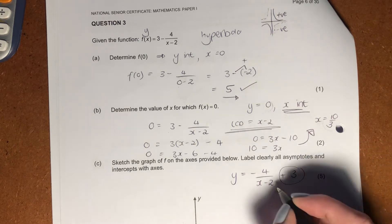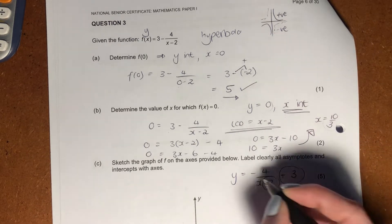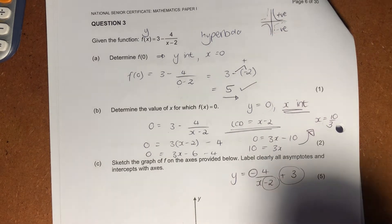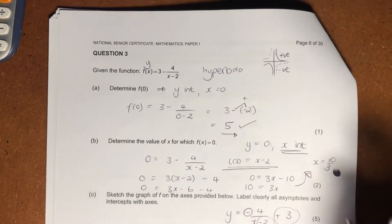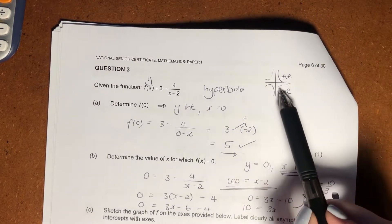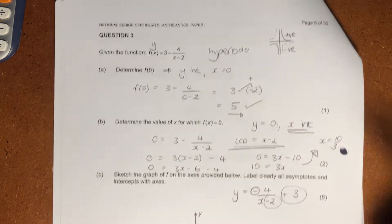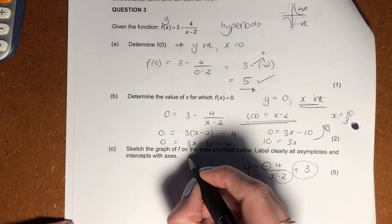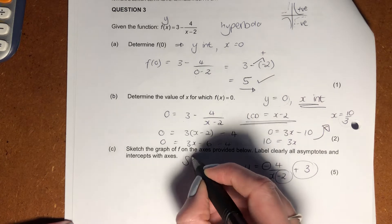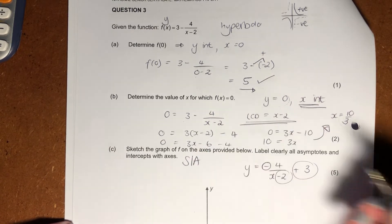We know that this here is our asymptote. This is another asymptote, and we now know that it is a negative hyperbola. Negative hyperbola sits in these two quadrants, so we know that that's the general shape. When it asks us to sketch, it's generally asking for shape, intercepts, asymptotes.